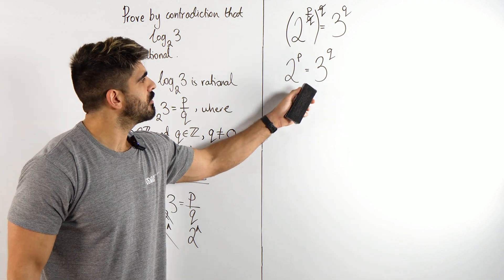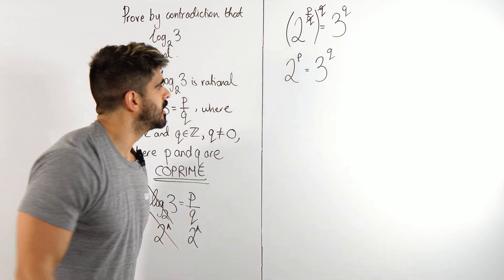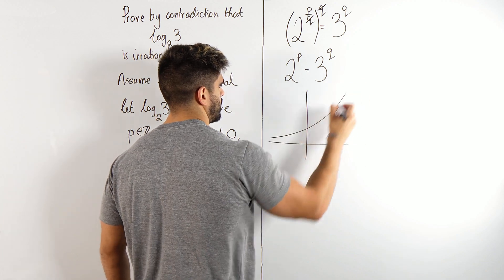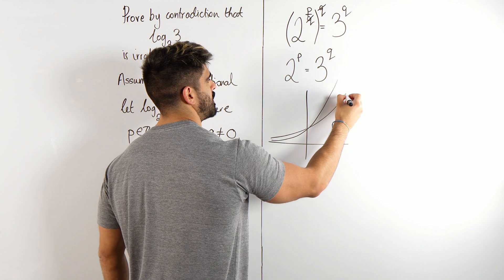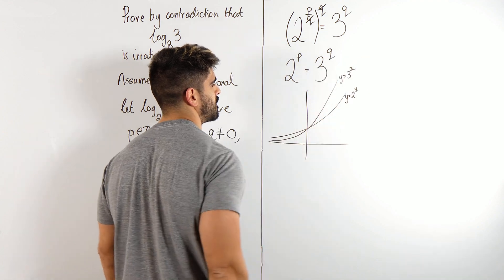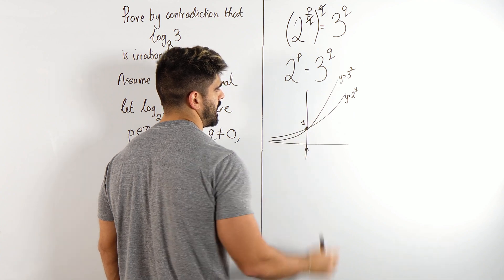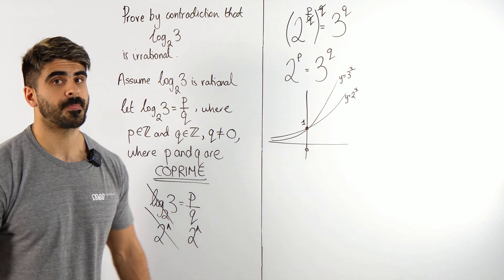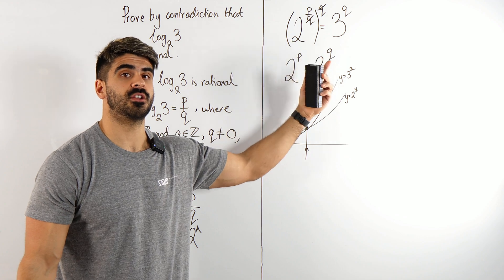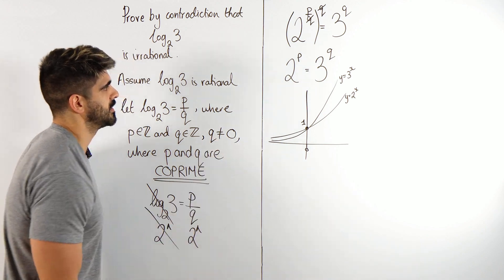Now think about it. How is it possible that 2 to the power of p equals 3 to the power of q? Well, if we think about the graphs, here might be y equals 2 to the power of x. Here might be y equals 3 to the power of x. They're only the same here, 1, when x is 0. Okay, so this is only true when one of these, well, both of those values are 0. Can that be possible? No, because I said q cannot be 0.